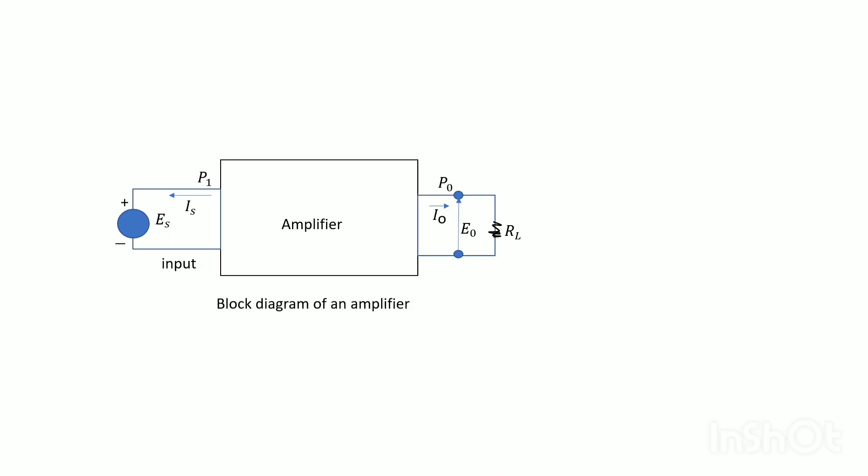Hello dear friends, welcome to my channel. Today's discussion is amplifier. An amplifier may be represented by the simple block diagram. The input signal voltage is denoted by Es.